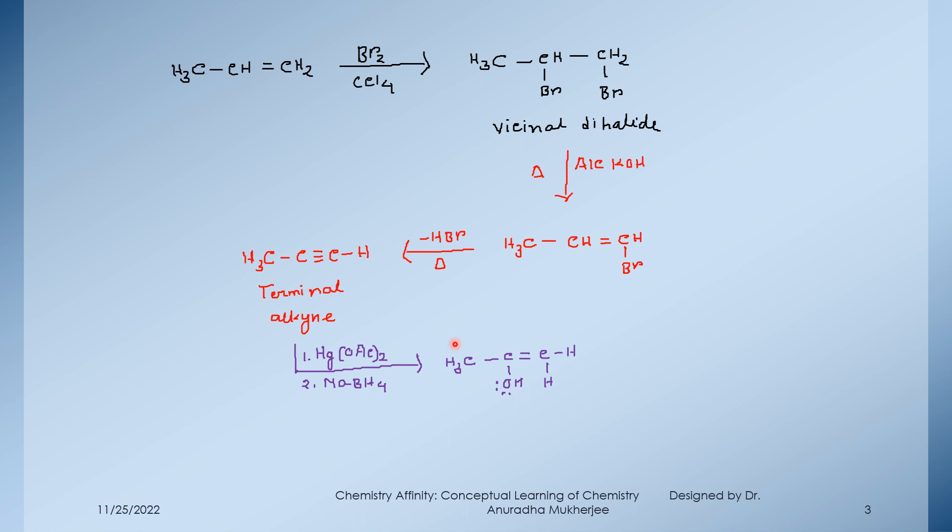When propyne reacts with mercuric acetate followed by sodium borohydride reduction, we get this compound. This reaction is called oxymercuration-demercuration reaction. In this reaction, we can introduce OH group across the double bond or triple bond and OH group attaches with the carbon which is more substituted. In case of alkyne, first OH group attaches with this carbon which is more substituted but this is not the final product. This compound looks like an enol form. So keto-enol tautomerism takes place and we get this product acetone. So this is the final product for oxymercuration-demercuration reaction.